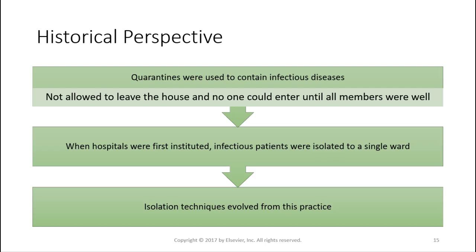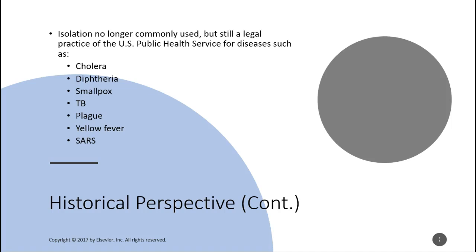Looking at quarantines — we used to use these to contain infectious disease, telling patients not to leave their house and allowing no one to enter until they're healthy. When hospitals were first instituted, infectious patients were isolated to a single ward. Isolation techniques evolved from this practice. Isolation is still a legal practice of the US Public Health Service for diseases such as cholera, diphtheria, smallpox, TB, plague, yellow fever, and SARS. The government can legally quarantine you if they think you have one of these diseases.